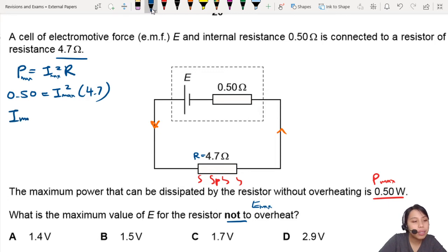You'll find a current that is maximum, which is about 0.326 amps.